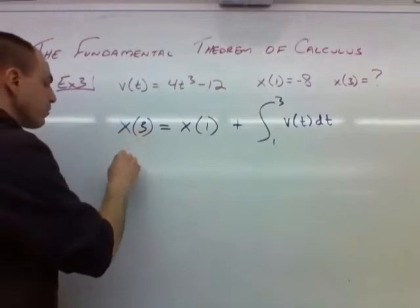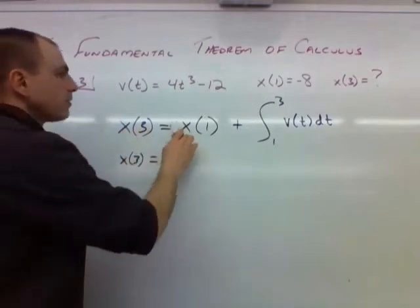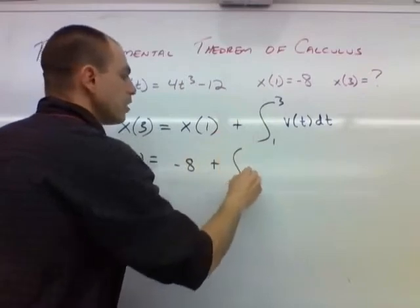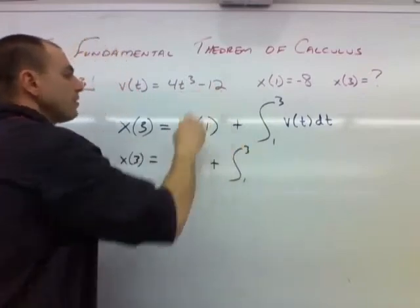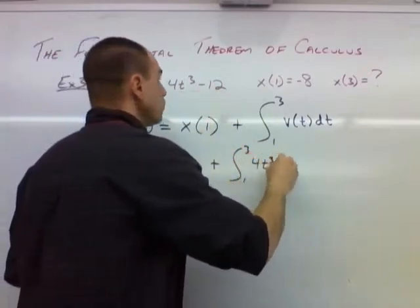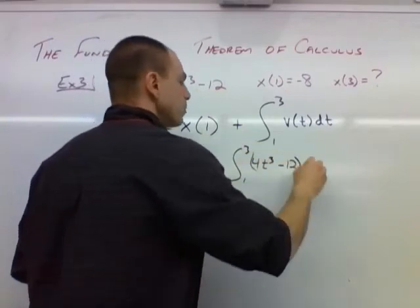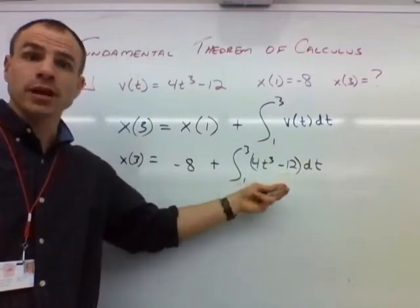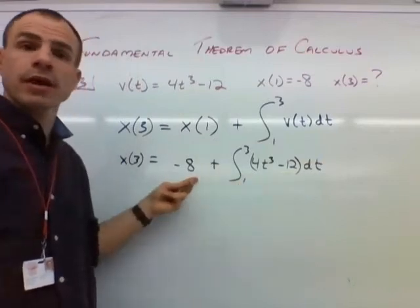So what we have here, x of 3, that's going to be equal to x of 1, which is negative 8. So negative 8 plus the integral from 1 to 3, and our velocity function is 4t cubed minus 12. So we're going to give that a dt. So we have to anti-derive this and perform the fundamental theorem of calculus on it. And we just got to subtract 8 from our answer.